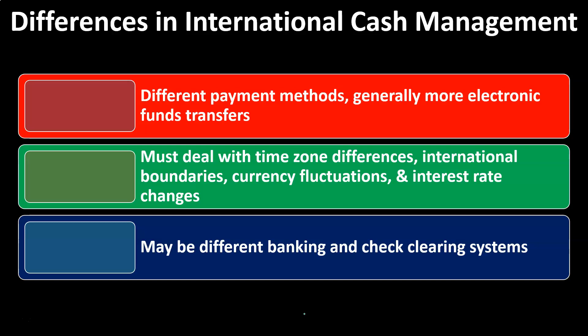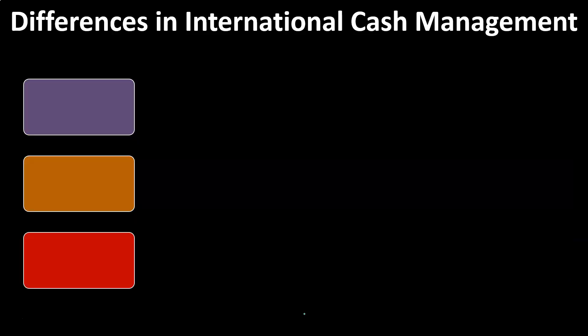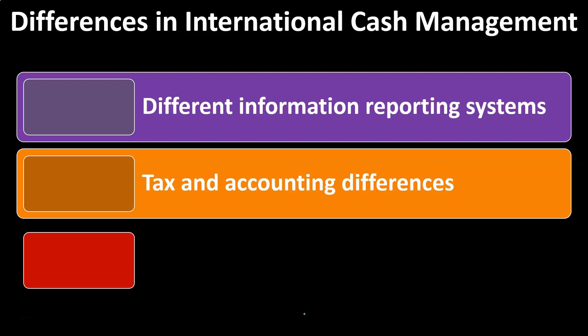We can also have different information reporting systems — how we need to report that information. Tax and accounting differences will always make things more complex. If we're dealing with different types of tax systems, not only do we have to deal with the taxes themselves, but also the application of tax laws in different areas, as well as accounting for those differences, which can complicate matters.